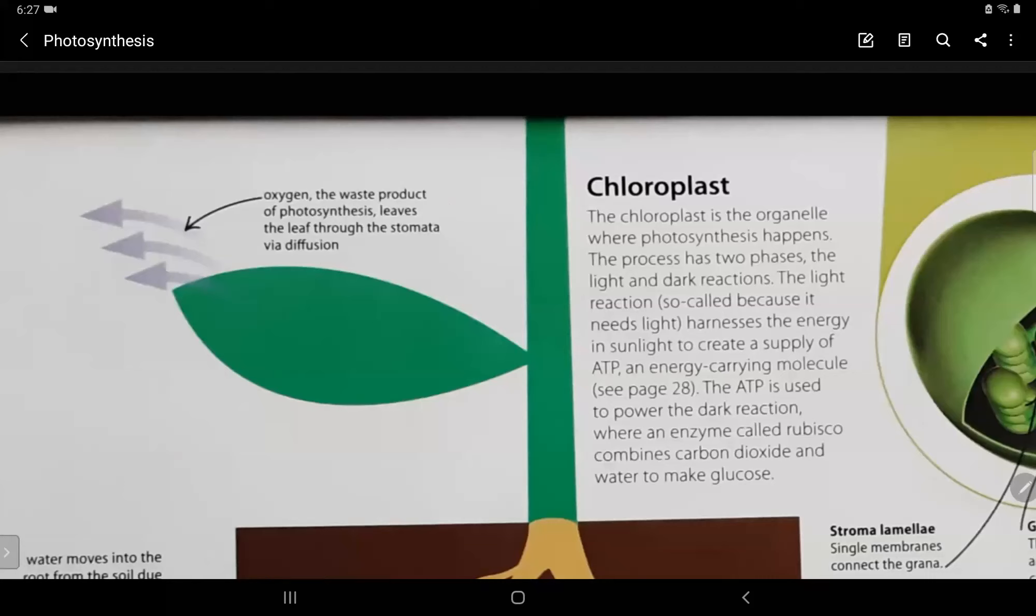Now, the oxygen which is the waste product of the photosynthesis leaves the leaves through the stomata by diffusion. Now, let's read about chloroplast. Yes, chloroplast is very crucial for photosynthesis. The chloroplast is the organelle where photosynthesis happens. Now, remember, an organelle is the organ inside a cell.